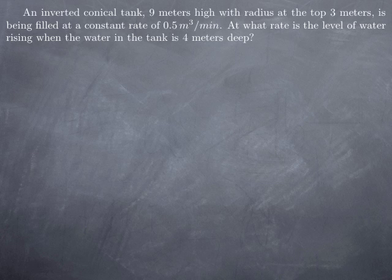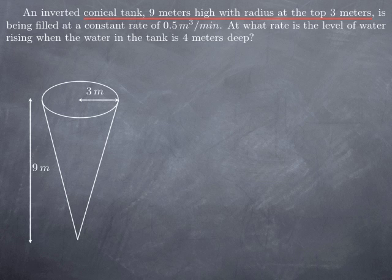So to interpret this text, we know that this is about a conical tank whose dimensions are given. So we draw the cone and this tank is being filled at a constant rate of 0.5 cubic meters per minute.